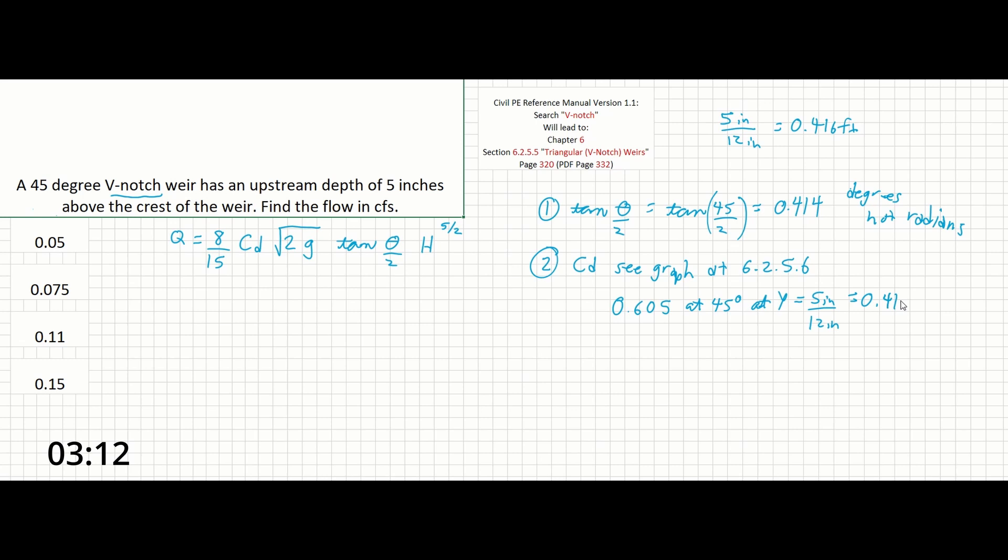Okay so now all we have to do is solve the problem so Q equals 8 over 15 times 0.605 times 2 times 32.2 feet per second squared times we said tangent of theta over 2 equals 0.414 and h is going to be 0.416 raised to the 5 over 2 and that's feet.